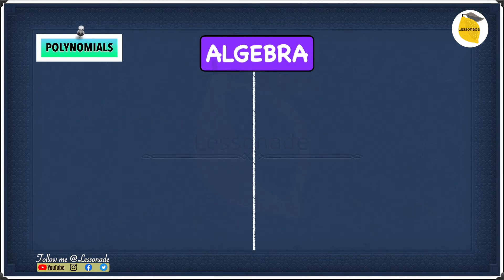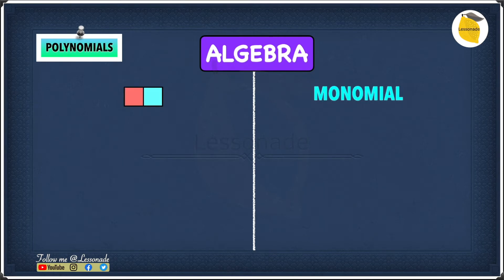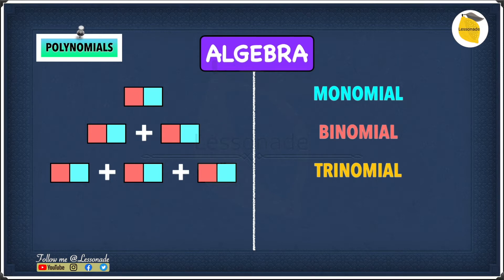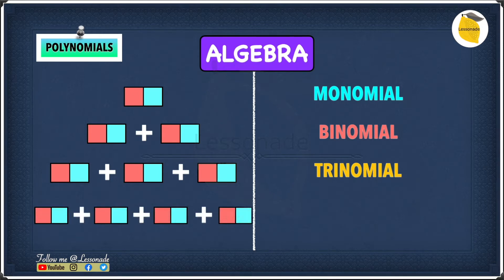If there is only one term, it's called a monomial. If there are two terms, it's called a binomial. Three terms, it's called a trinomial. If there are four or more terms, then it's called a polynomial.